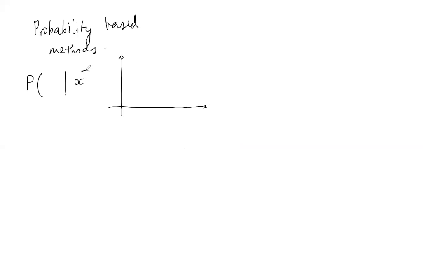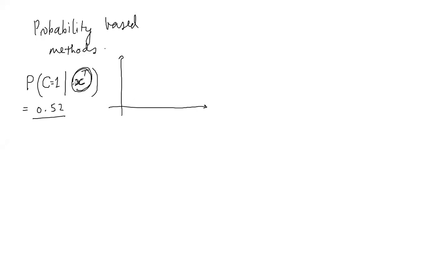Given a particular attribute vector, you want to find the probability that it belongs to class 1. If you can convert this attribute vector into a probability value, you get two distributions — one for class 0 and one for class 1. If they don't overlap too much, you can find a cutoff: anything to the left is class 0, to the right is class 1.